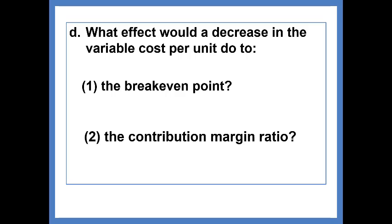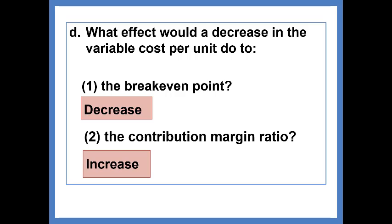What effect would a decrease in the variable cost per unit do to the break-even point and the contribution margin ratio? Well, any time you have a decrease in cost, whether it's variable or fixed, you're going to have a lower break-even point. The contribution margin ratio, with lower variable cost, the contribution margin would be higher, resulting in a higher contribution margin ratio.